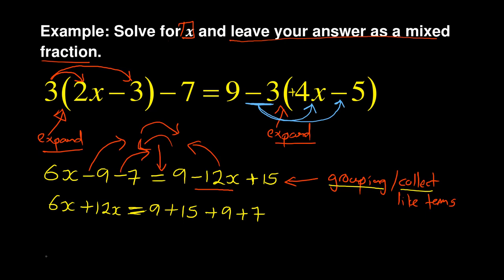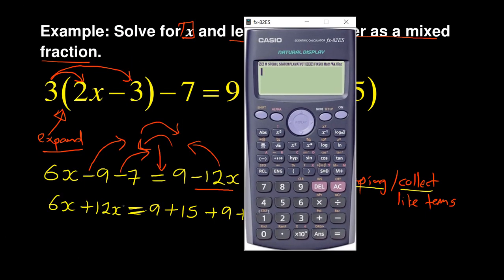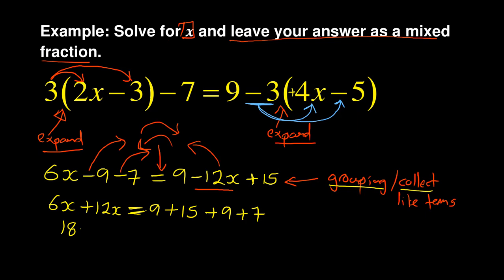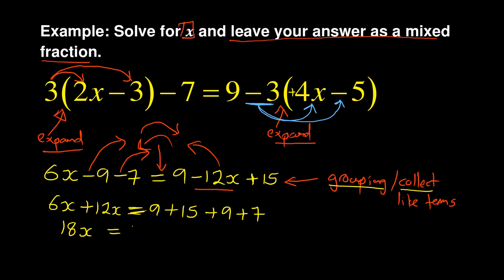After I've done that, then I use my calculator. On the left hand side, I have 6x plus 12x. Don't let the x confuse you. You just focus on the number 6 plus 12. And then you just maintain your x. So it is 18x is equal to, then you add your numbers on the right hand side, which is 9 plus 15 plus 9 plus 7. I'm getting 40 on the other side.